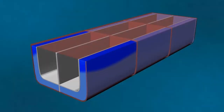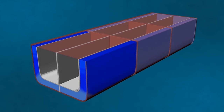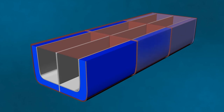In the dilution method, replacement ballast water is filled through the top of the ballast tank with simultaneous discharge from the bottom at the same flow rate, maintaining a constant level in the tank.